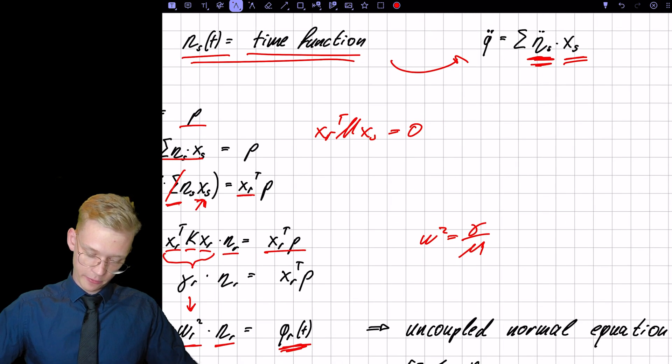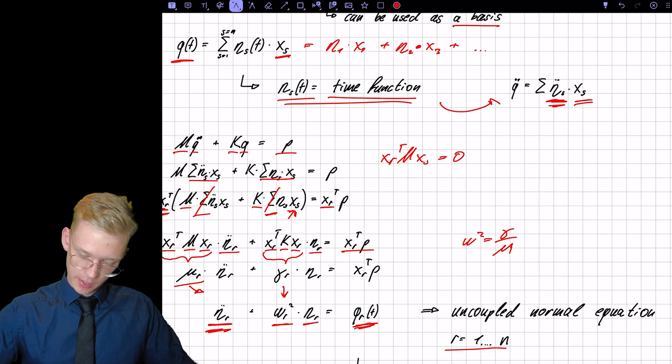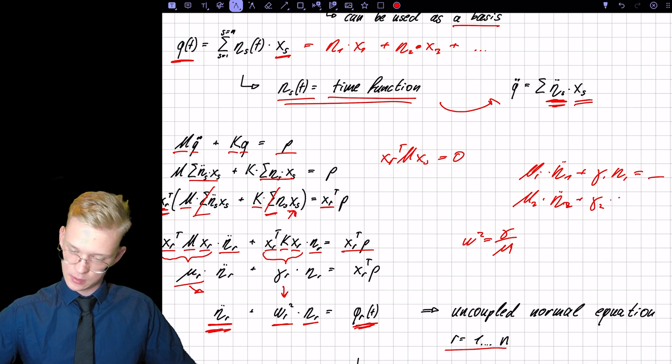So we will have equations that will look something like this. We have mu1 times eta double dot 1 plus gamma 1. Nu1 is something.